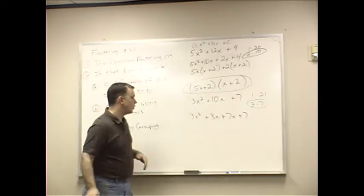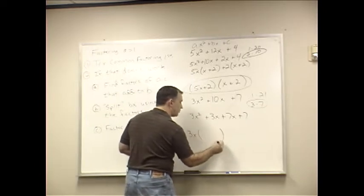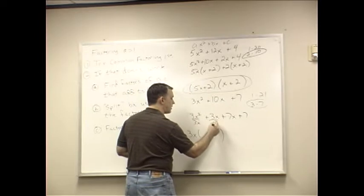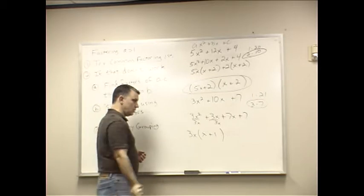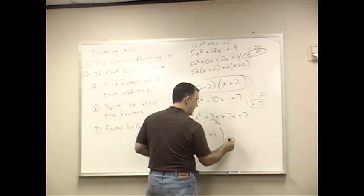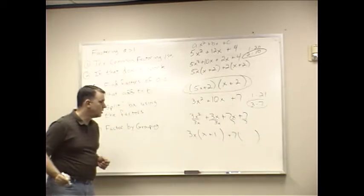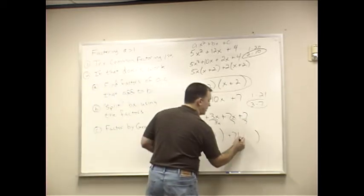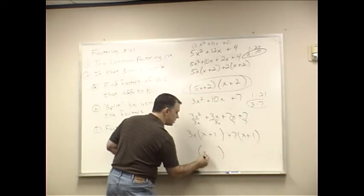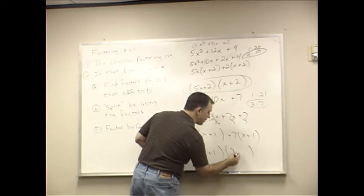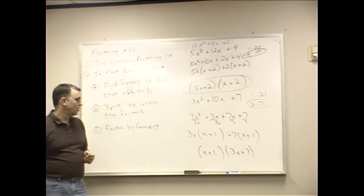Now, we just do factoring by grouping. 3X squared and 3X. I can factor out a 3X. Divide by 3X. Divide by 3X. It gives me X plus 1. With this one right here, I can factor out a 7. Divide both of these by 7. And, that also gives me X plus 1. They have an X plus 1 in common. And, that leaves me with 3X plus 7 for the other parenthesis.